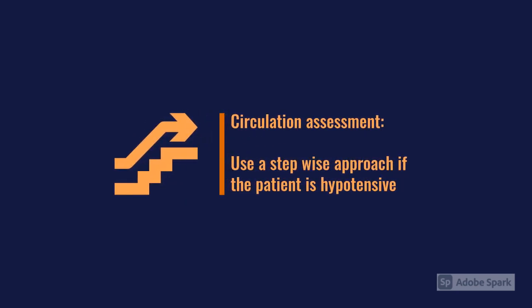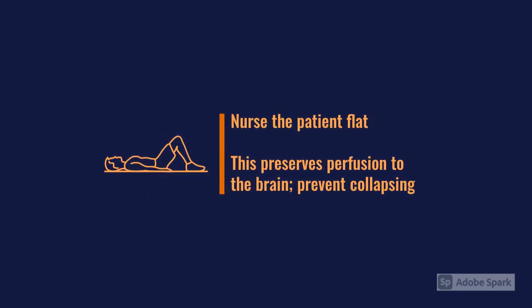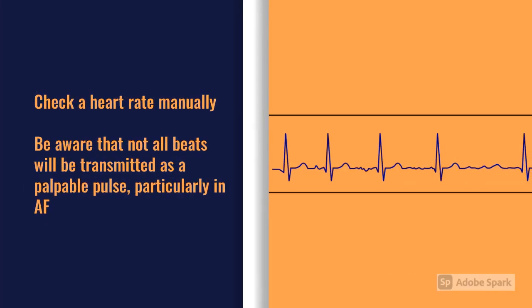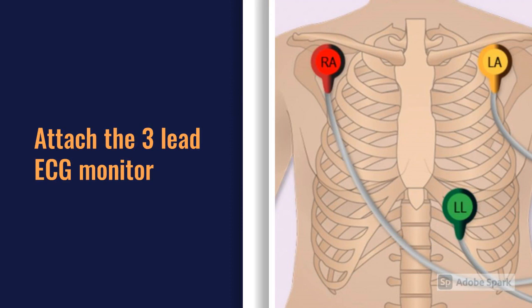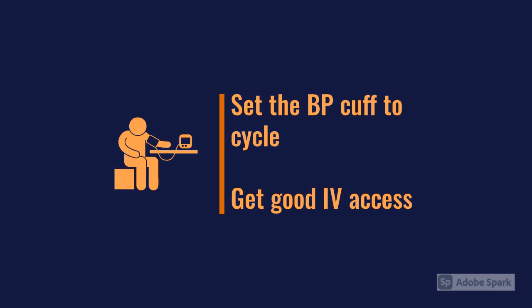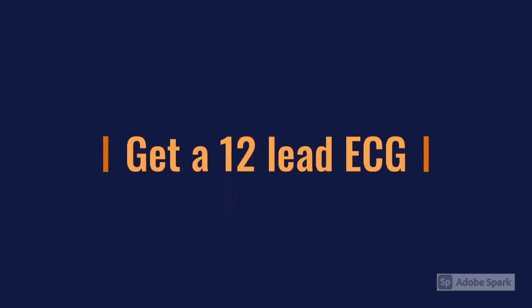There's quite a lot to do within circulation for a hypotensive patient. One of the keys is to get them flat early to preserve perfusion to the brain. Check heart rate — manually by feeling for a pulse, being aware that not all beats will be transmitted, for example in atrial fibrillation. Are they bradycardic or tachycardic? Attach a 3-lead ECG monitor, a blood pressure cuff for serial monitoring, get IV access early, and get a 12-lead ECG.